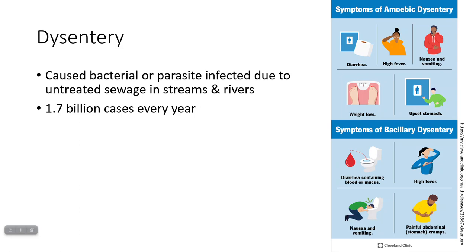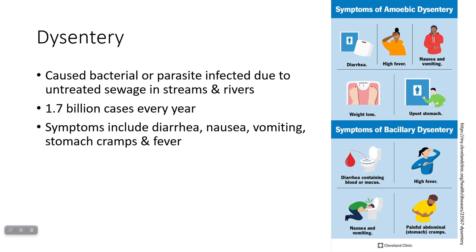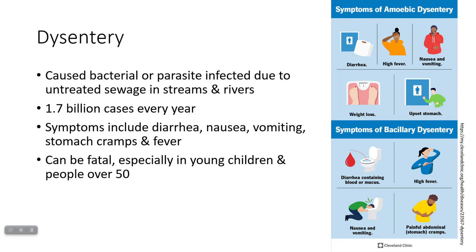Dysentery basically comes from fecal contamination, and it can be caused either by a species of bacteria or by amoebas, which are parasites. There are still about 1.7 billion cases of dysentery every year, so it's an ongoing health problem. Symptoms include diarrhea, nausea, vomiting, stomach cramps, and fever. A lot of times there's blood in the diarrhea or mucus, which can be serious. It can be fatal, especially in young children or people over 50. This is why it's important to have good sanitation and treat sewage before it's released, and why it's important to wash your hands. You can detect contamination by measuring fecal coliform bacteria levels, as discussed in our sewage treatment notes.